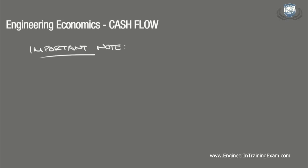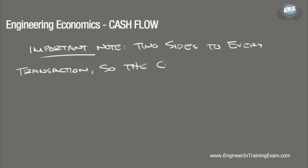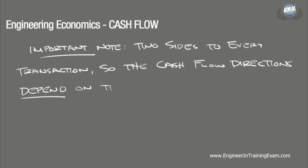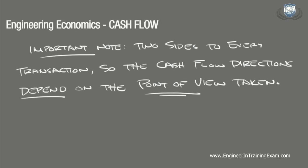One often overlooked but crucial detail to note is that since there are two sides to every transaction, the cash flow directions in cash flow diagrams depend upon the point of view taken. For example, if we were to illustrate a cash flow of a loan, it would look different for the individual taking the loan than it would for the bank giving the loan.